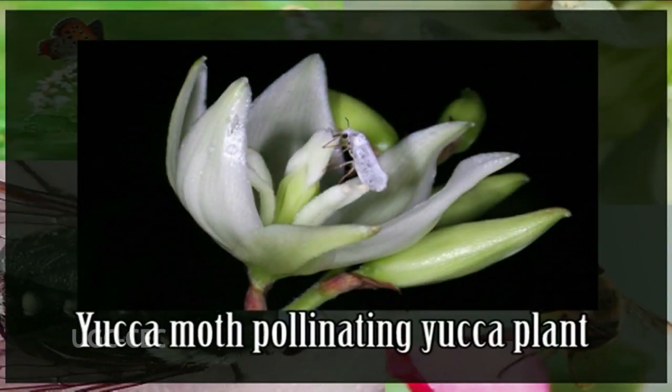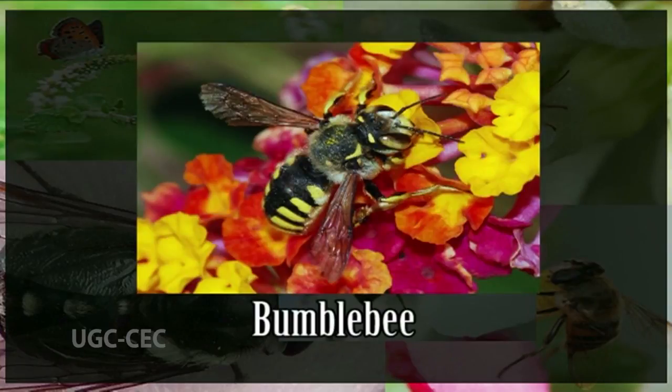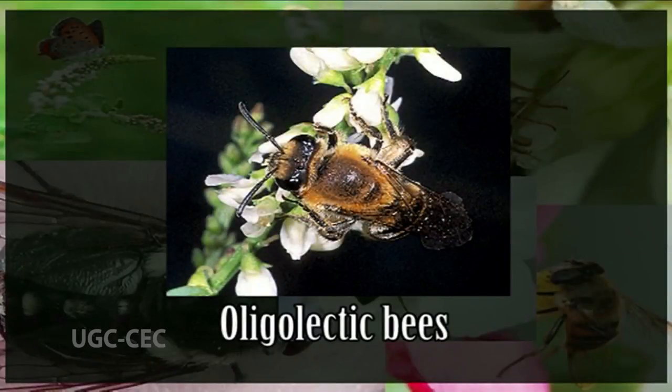An example of obligate co-evolution is the pollination of yucca plants by yucca moths. The second type is diffuse co-evolution of few to many facultative partners, as in many pollinator systems of bumblebees and other polylectic pollinators. In such a system, more than one type of pollinator exerts a selective pressure on more than one plant. The third type of co-evolutionary system is asymmetrical co-evolution with unbalanced reciprocal effects, such as occurs in oligolectic bees specializing on a few related plants as pollen sources, where a particular group of pollinators develops adaptations in response to many related flowers.